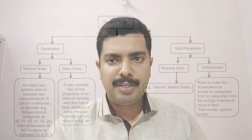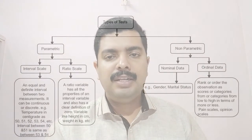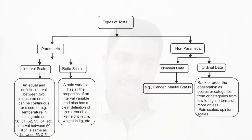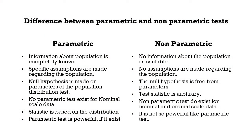To summarize, there are two types of tests: parametric and non-parametric. The measurement scale used in the data helps determine which test to apply. If the data is nominal or ordinal, use a non-parametric test. If the data is on a ratio or interval scale, use a parametric test. The primary check is whether information about the population is completely known — if yes, it is parametric; if not, it is non-parametric.